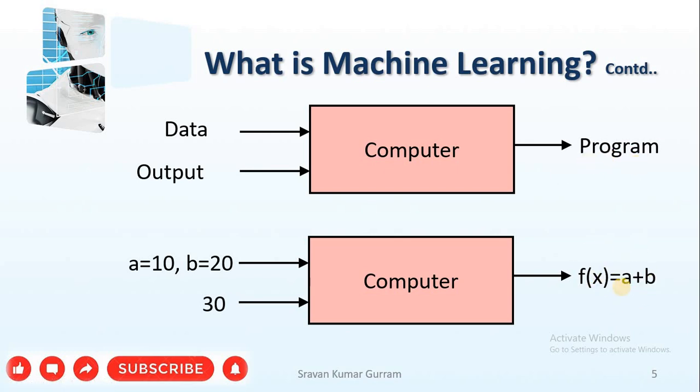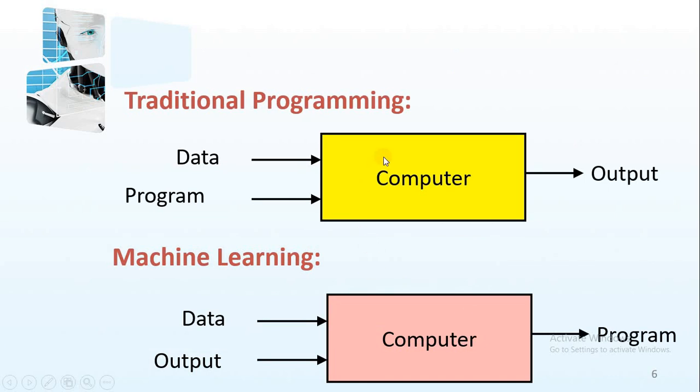Without explicitly writing the program, the computer can understand, the computer can learn about the data. So I think the difference is clear. In the traditional programming, data and program we are giving to the computer, we are getting the output depending on the instructions and data. Coming to the machine learning, we are giving data and output and we are getting the program.